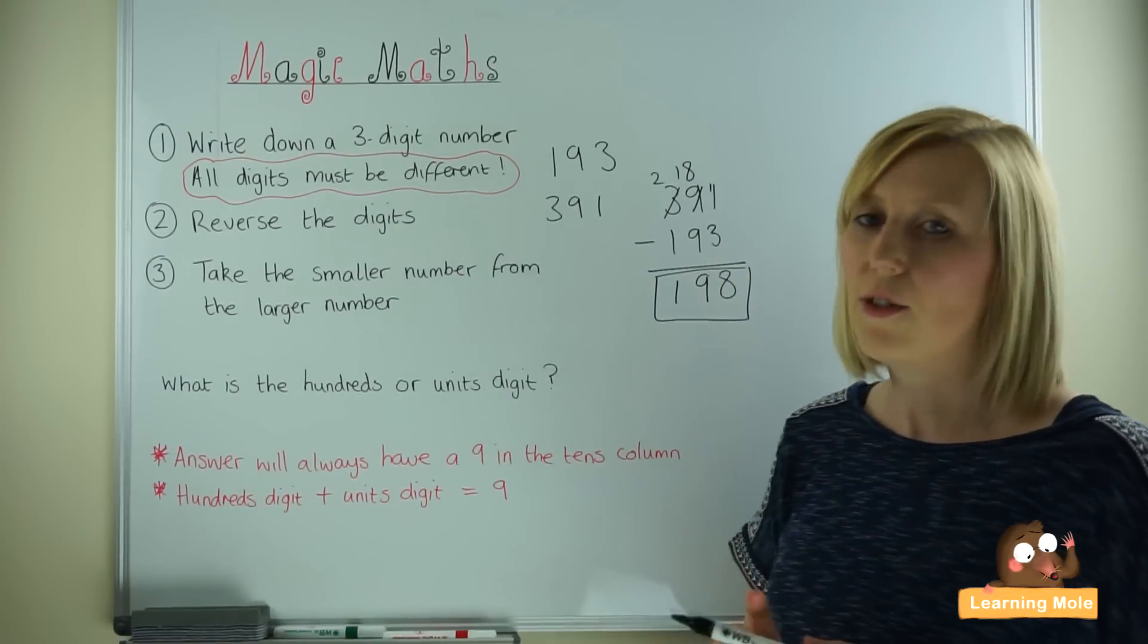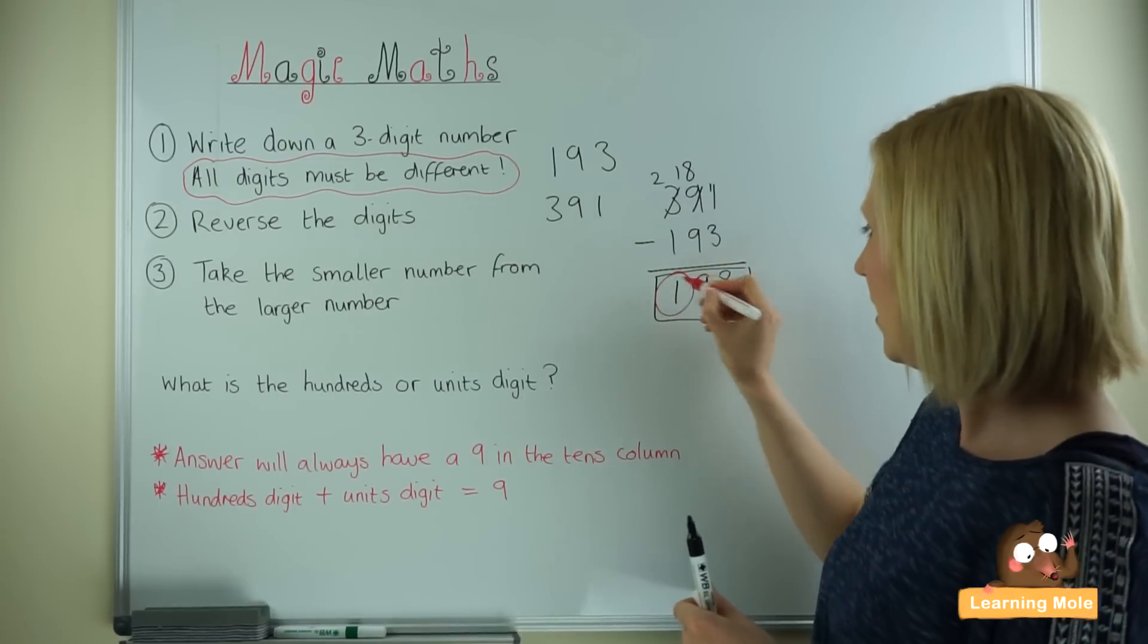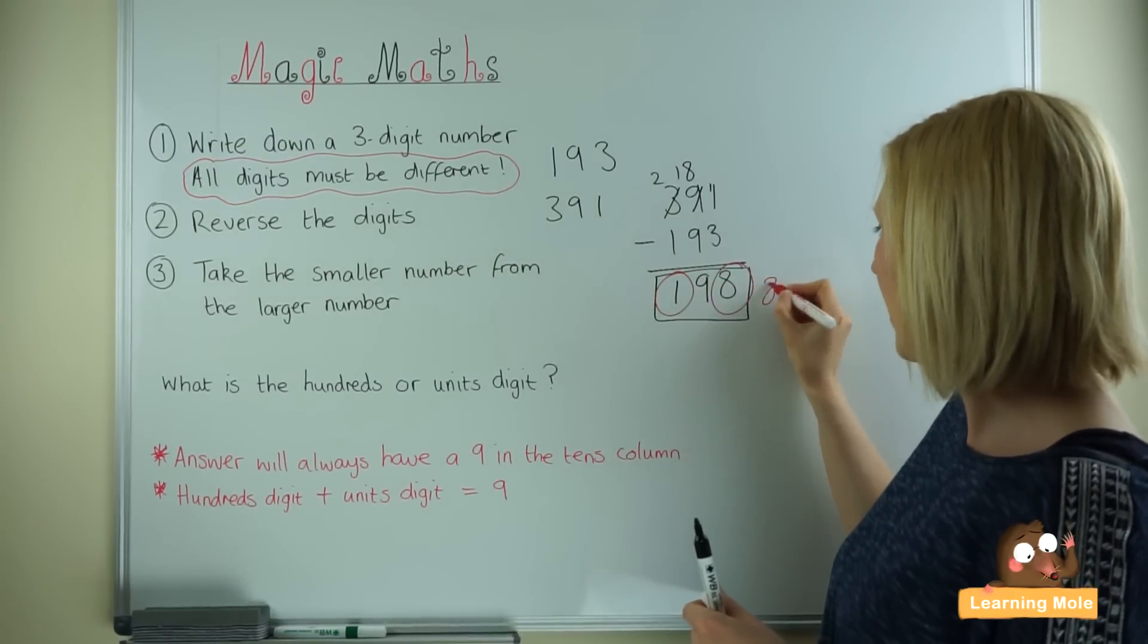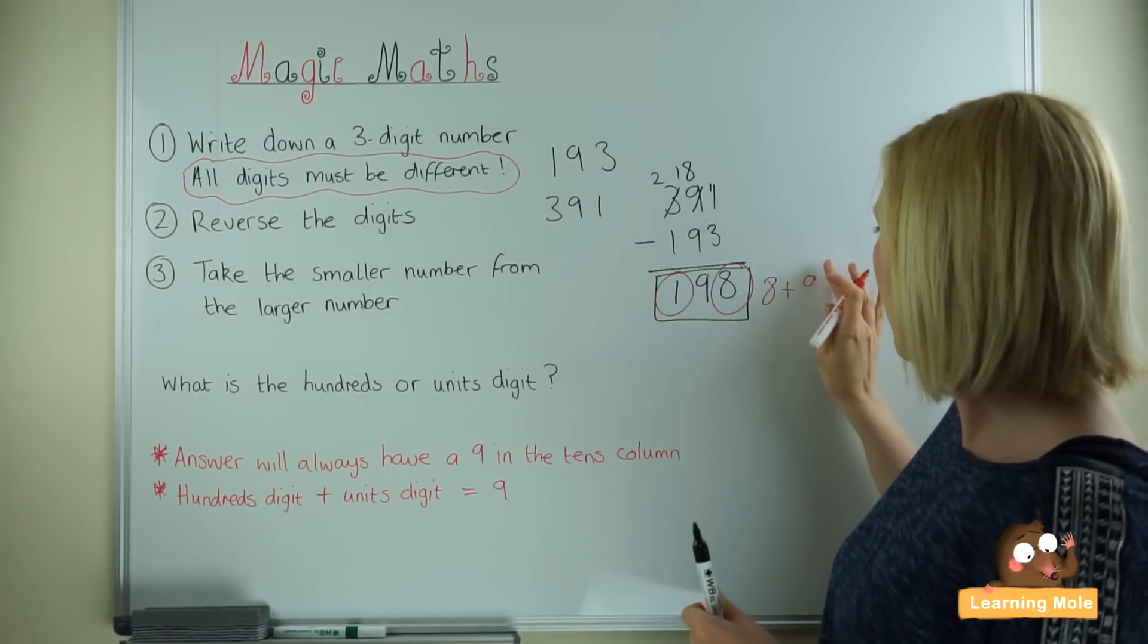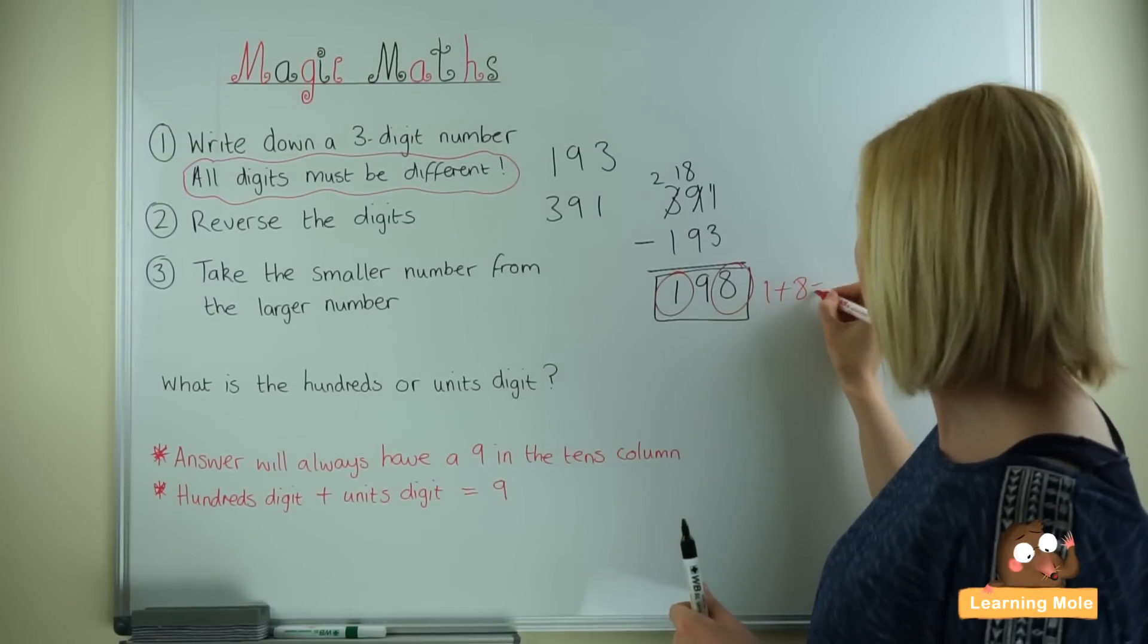The hundreds and the units digit will also add up to 9. So the hundreds and the units, when they're added up, they will equal 9. Oh, sorry, wrong way round. 1 plus 8 equals 9.